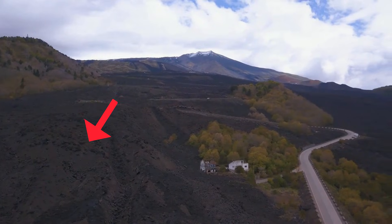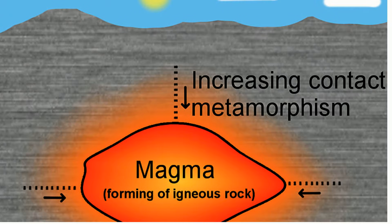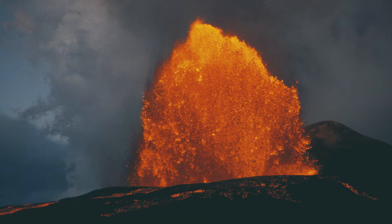Igneous rocks may form from magma, which is found inside the earth, or lava, which is molten rock on the surface of the earth.